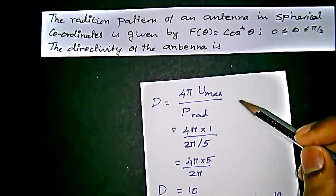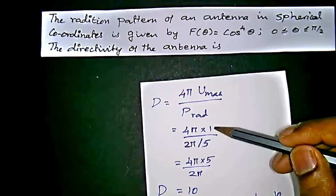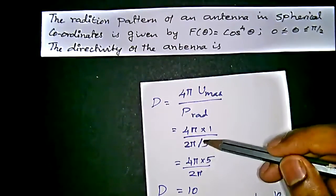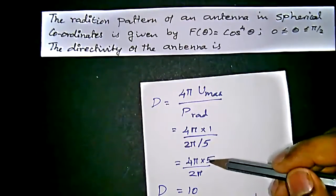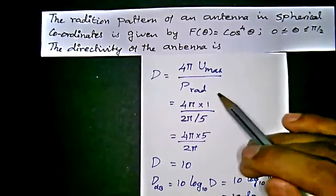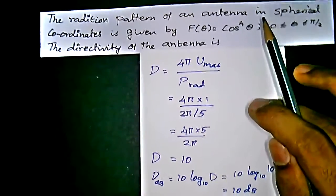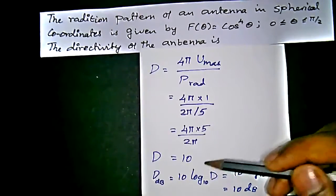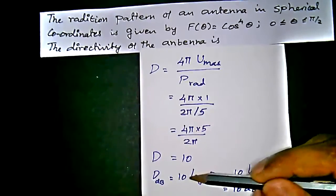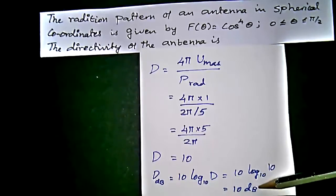Substituting the values: D = 4π × 1 / (2π/5) = 4π × 5 / (2π) = 20π / 2π = 10. So the directivity is 10. Converting to decibels: D(dB) = 10·log₁₀(10) = 10 dB. The directivity of the antenna is 10 dB.